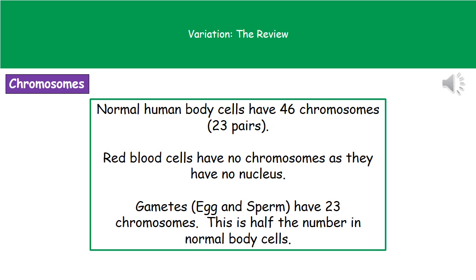We need to remember how many chromosomes are present in different cells. In a normal human body cell, there are 46 chromosomes, made up of 23 pairs. Red blood cells are an exception — they have no chromosomes at all, because they have no nucleus. Our gametes, which are the sperm and the egg, have half the number, so they have only 23 chromosomes.